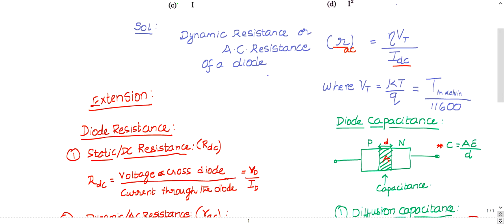The formula is given by η·Vt / Idc. Here, η (nita) indicates a constant — its value can be 1 or 2 based on whether the diode is silicon or germanium.